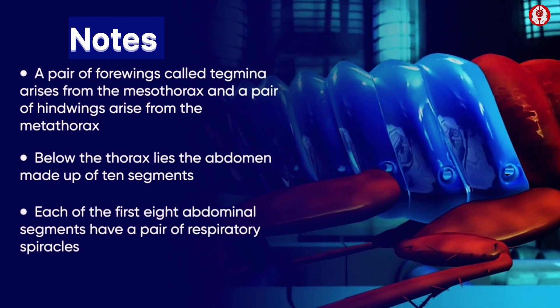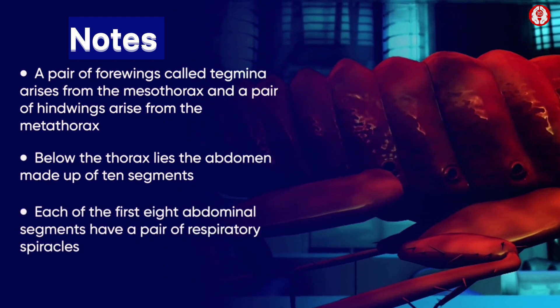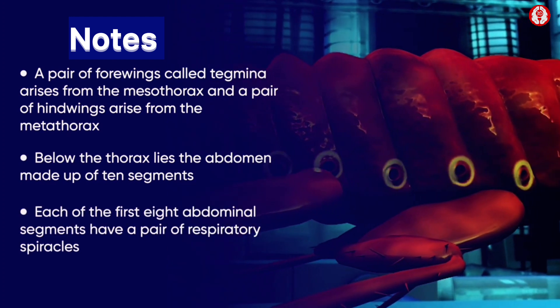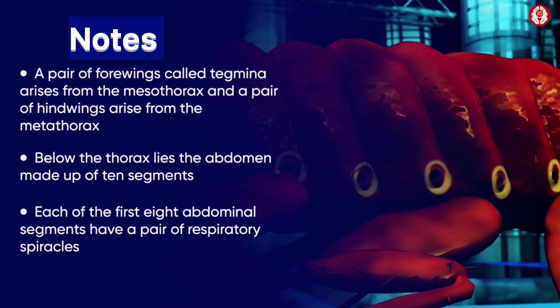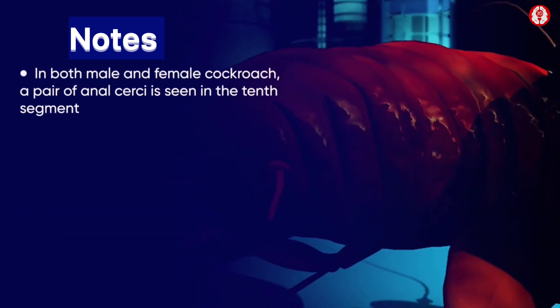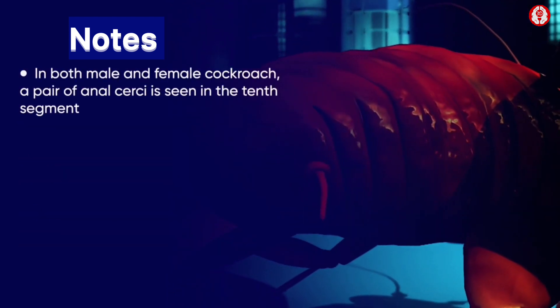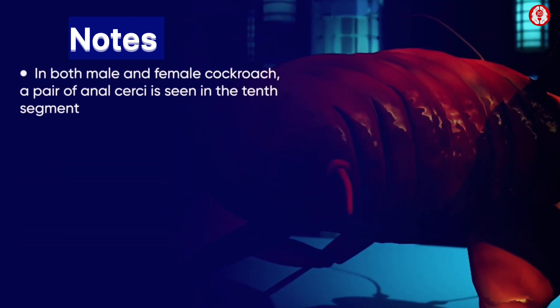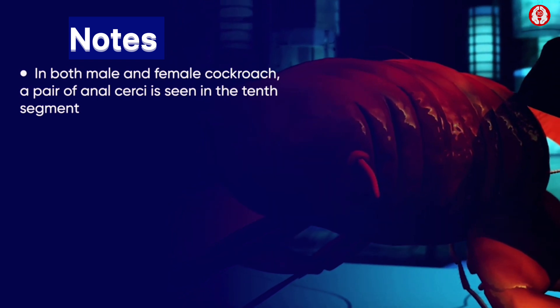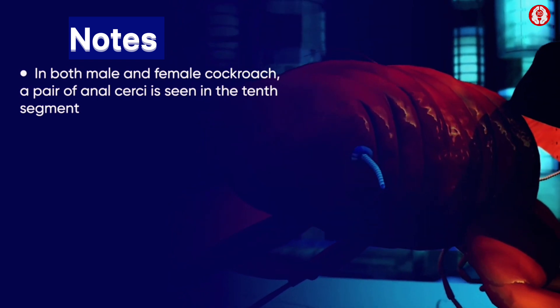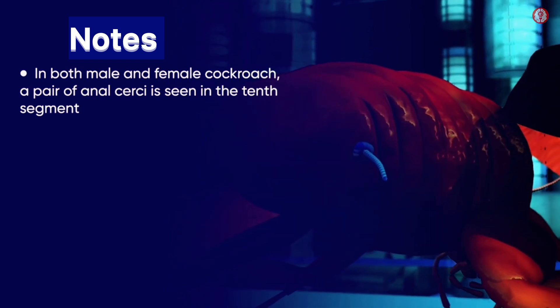Each of the first eight abdominal segments have a pair of respiratory spiracles in both male and female cockroach. A pair of anal cerci is seen in the tenth segment.